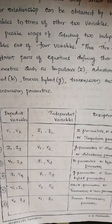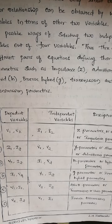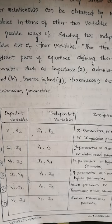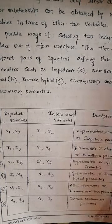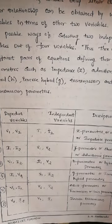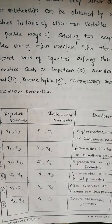In the next video, we are going to discuss each parameter type thoroughly one by one. We will start with Z parameters, also called open-circuit impedance parameters — covering how to express dependent and independent variables, symmetric conditions, reciprocal conditions, and some numerical problems.